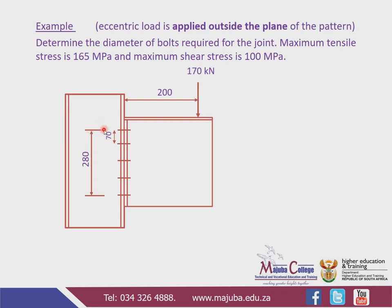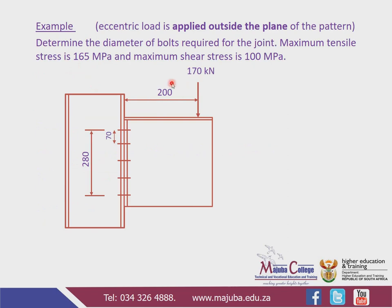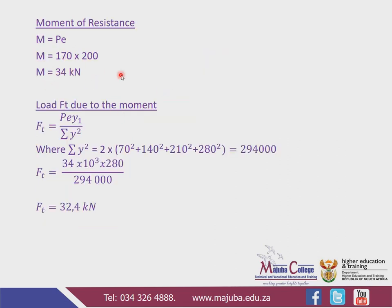We've got a beam connected to the column flange. The first step is to determine the moment of resistance. The moment of resistance is equal to P times e, meaning the applied force multiplied by the eccentric distance. The applied force is 170 kN and the eccentric distance is 200 mm. So: 170 × 200 = 34,000 N·m. Dividing by 1,000 gives us 34 kN·m.